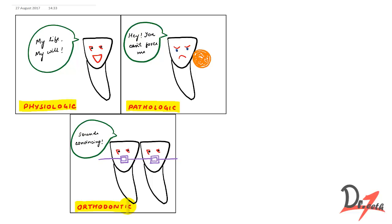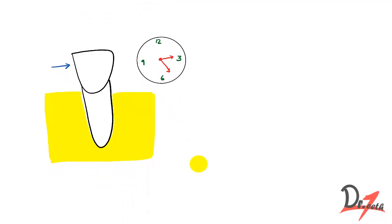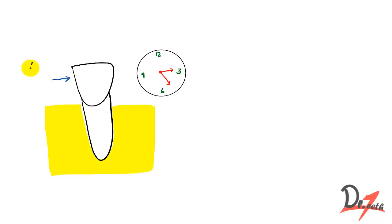In this video we are going to focus on orthodontic tooth movement. For orthodontic movement we need three things: first, an optimum force; second, application of that optimal force for a sufficient amount of time; and third, bone remodeling.